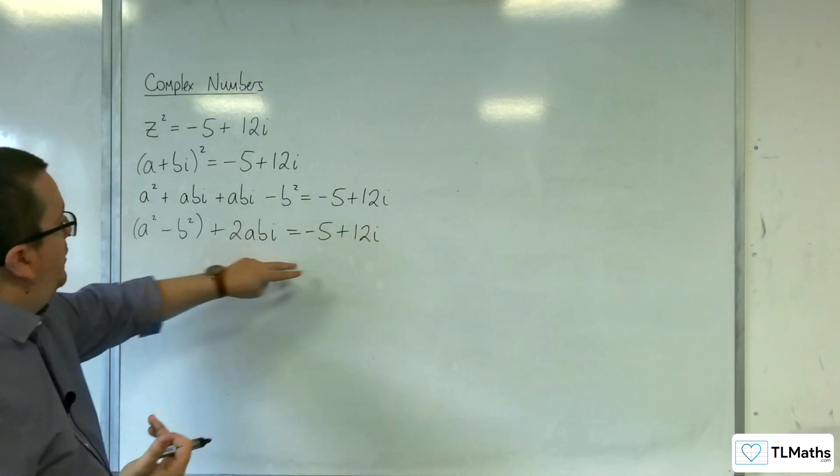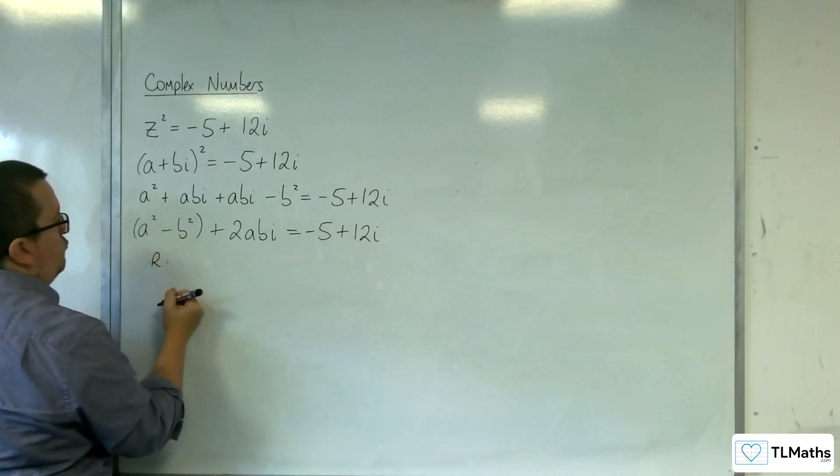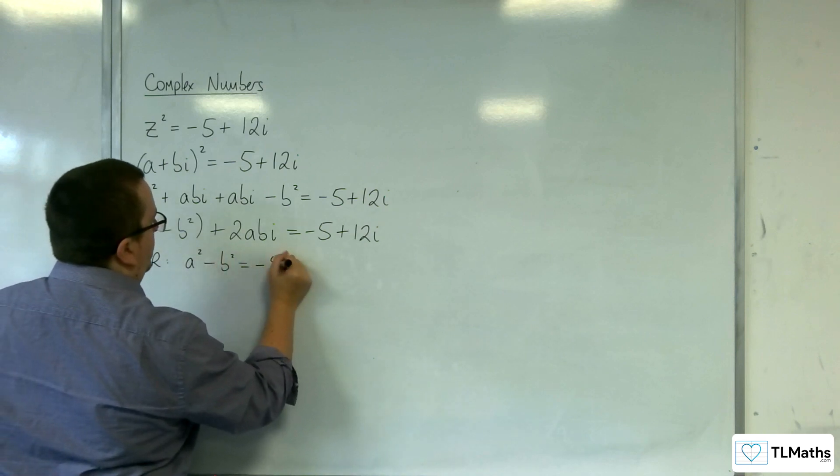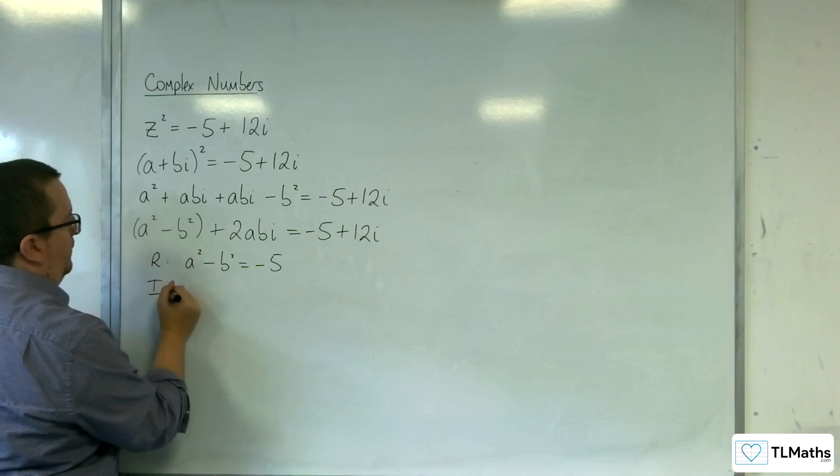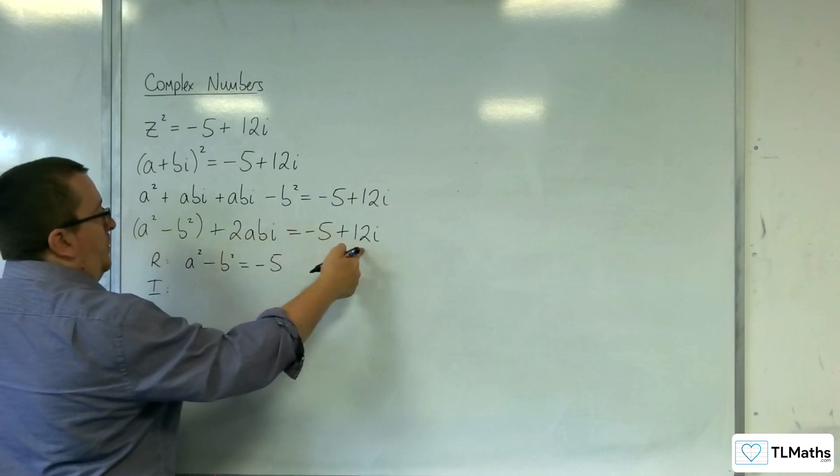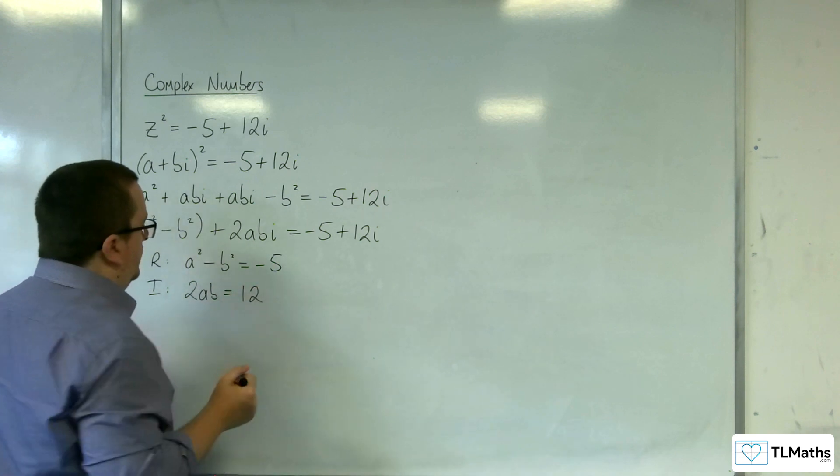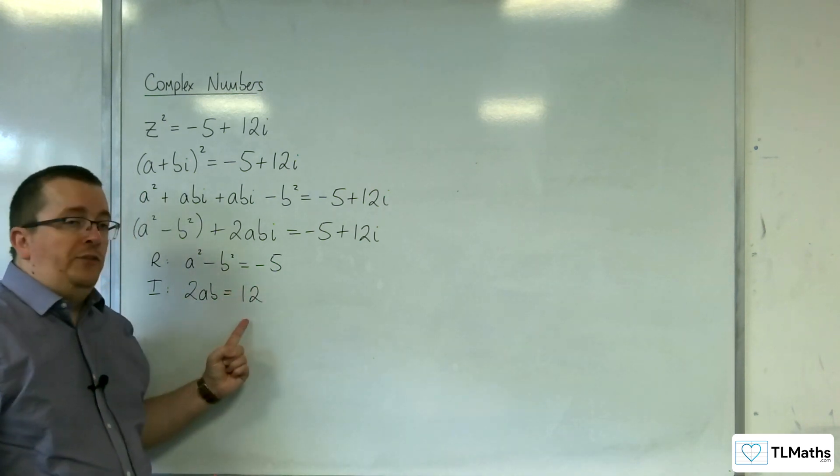So the a²-b² has got to be equal to -5. So comparing the real parts, a²-b² has got to be equal to -5. And if you compare the imaginary parts, the 2ab has got to be the same as 12.